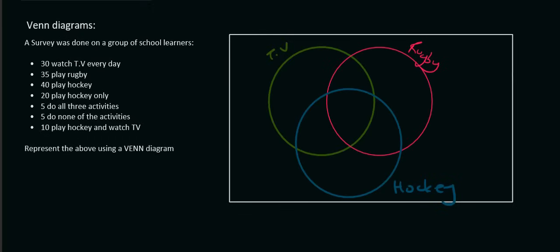So the first thing they tell us is that 30 people watch rugby. Guys, that does not mean we go and put a 30 over there. The 30, remember TV is this whole green circle, so it means that this part, this part, this part, and this part should add up to 30. But we don't know how much must go in each part, so we can't use that value just yet.